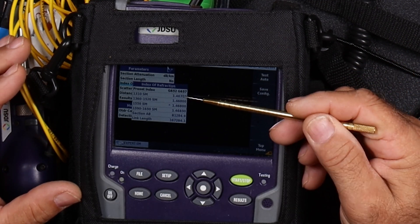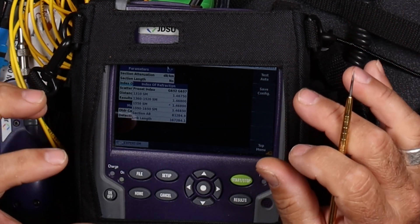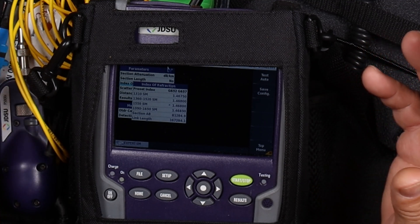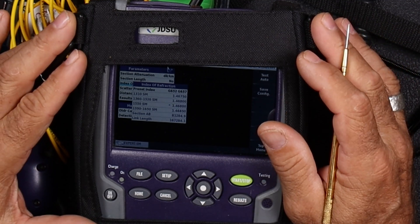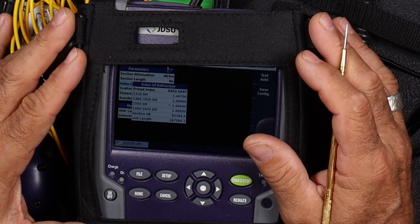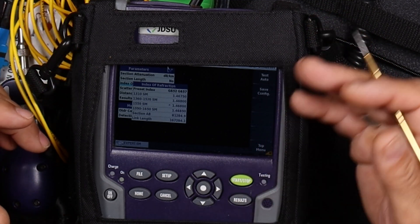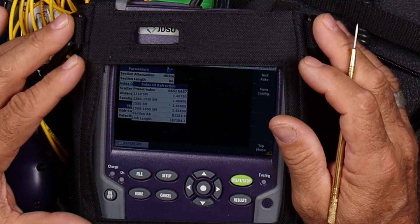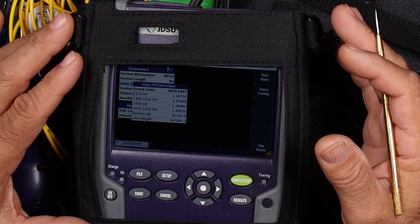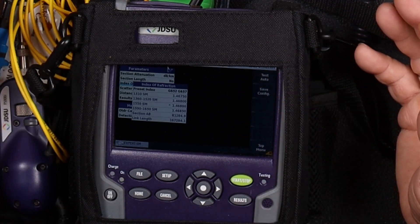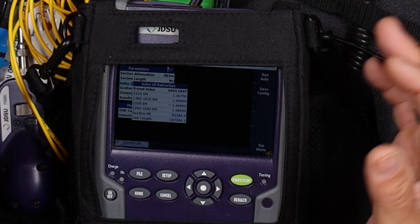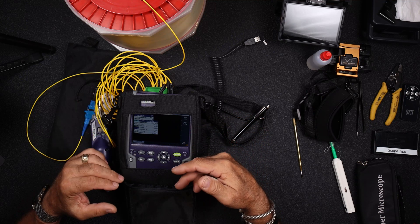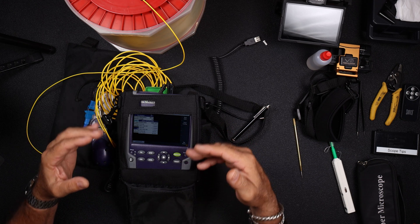If you change this number, what happens is you're not changing how fast the light's going in the fiber. We can't change that. That's intrinsic. It's built into the fiber. It is what it is. You live 30 miles away. I'm going to drive to your house at 60 miles an hour. You could expect me to get to your house in 30 minutes. Now, if I drove at 30 miles an hour and you didn't have a watch on, you would think that I had been driving for 30 minutes because you have no reference of that time. If you start changing these IORs, we start getting distance results skewed on your OTDR.